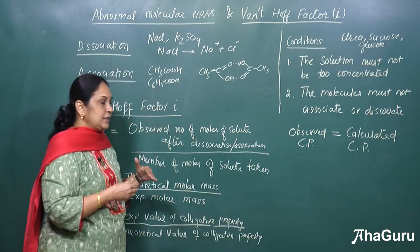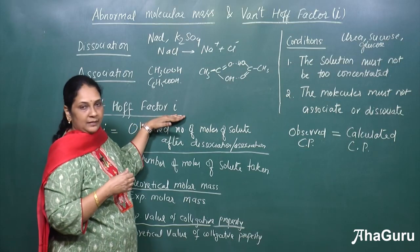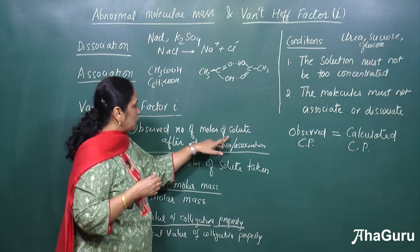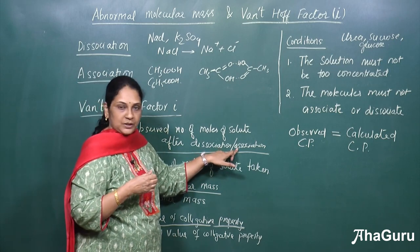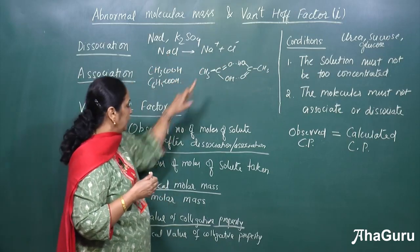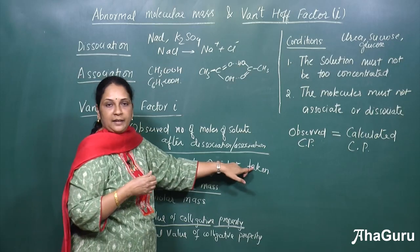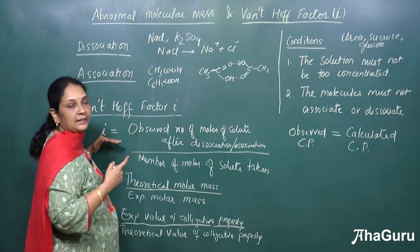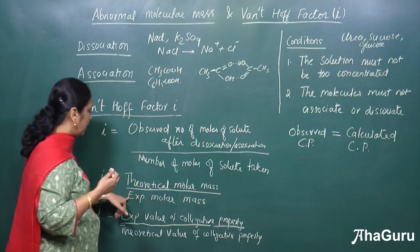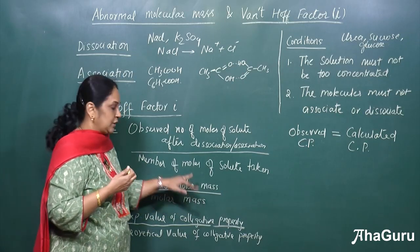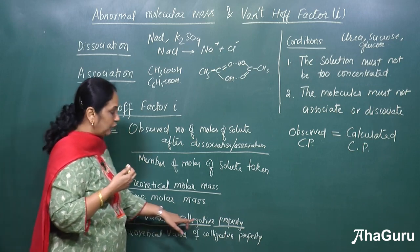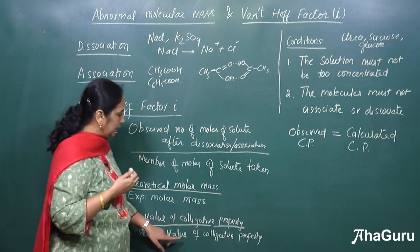Because of these observations, Van't Hoff calculated a value called the i factor, or Van't Hoff factor. He defined i as the observed number of moles of solute after dissociation or association divided by the number of moles of solute taken. So if one molecule dissociates into two, i = 2/1. It can also be calculated as theoretical molar mass divided by experimental molar mass, or as the experimental value of the colligative property divided by the theoretical value of the colligative property.